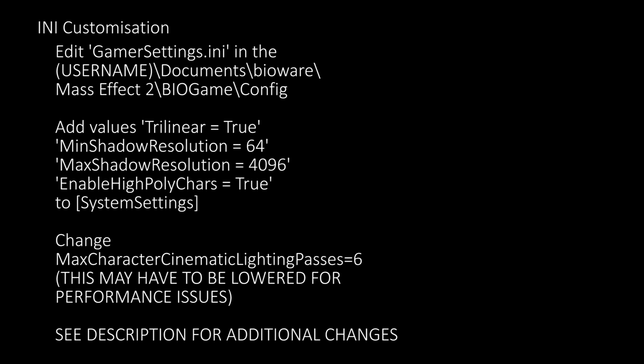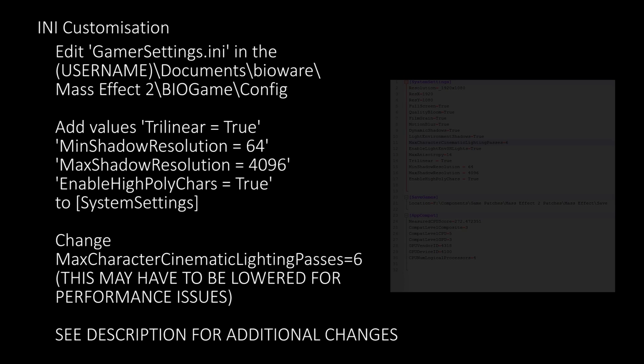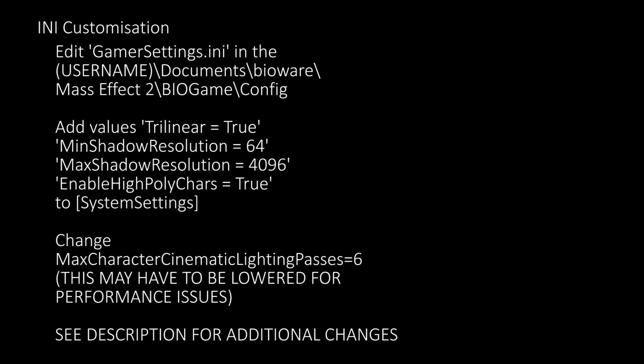You can also change the value Max Character Cinematic Lighting Passes to a higher value — in this case I've chosen 6, although this can have an effect on performance. If you do encounter performance issues, it's suggested you remove 4096 and replace it with something like 2048.